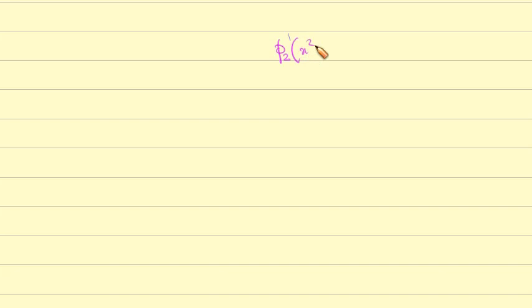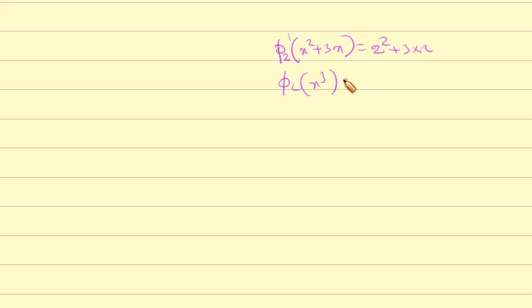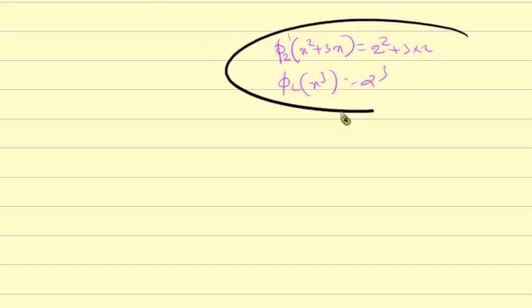The evaluation homomorphism: for example, phi_2 is the evaluation homomorphism. phi_2(x² + 3x) equals 2² + 3·2, and phi_2(x³) equals 2³. Evaluating at 2 gives a clear result.